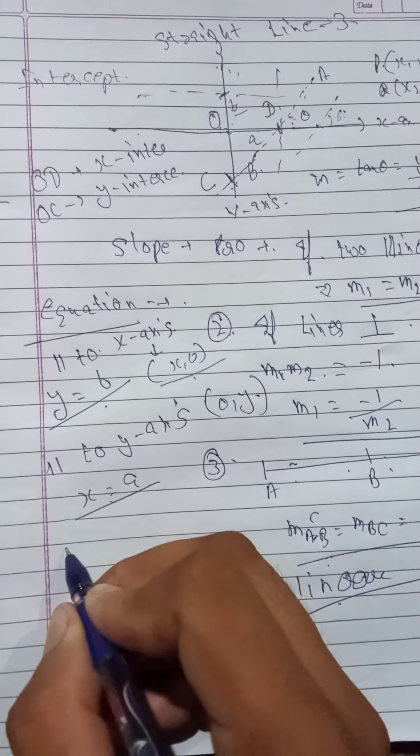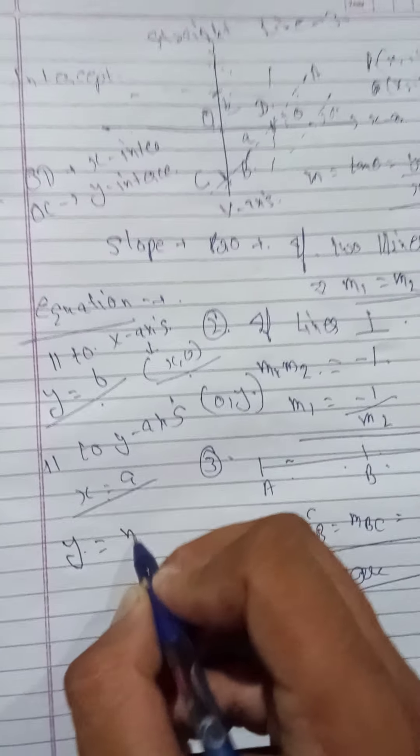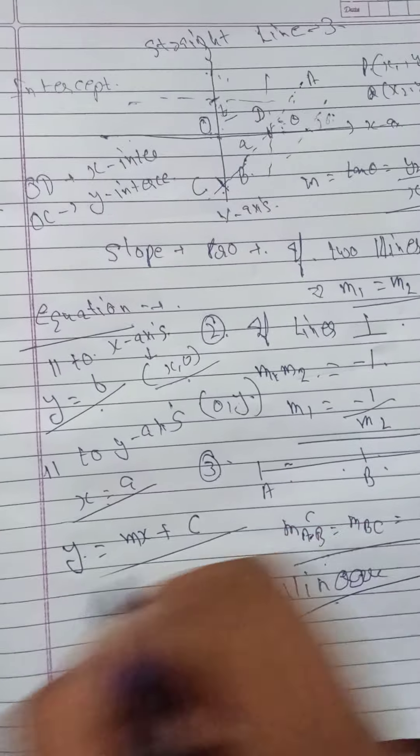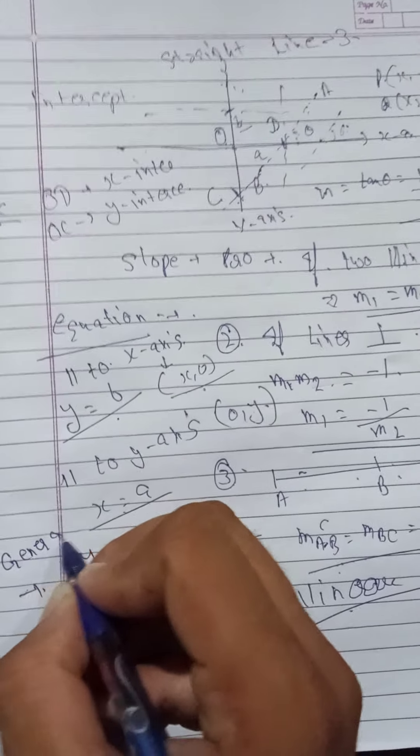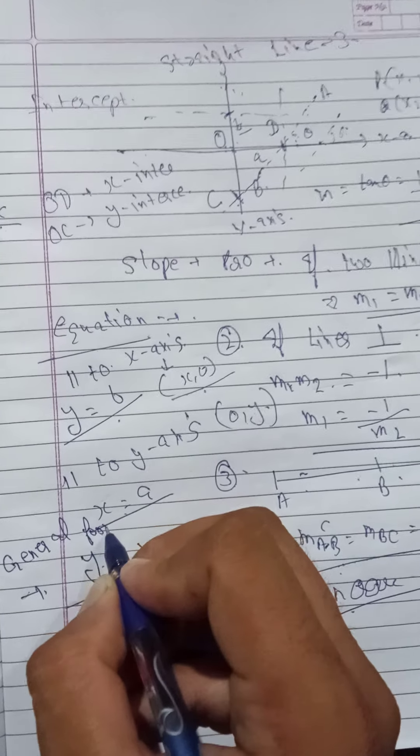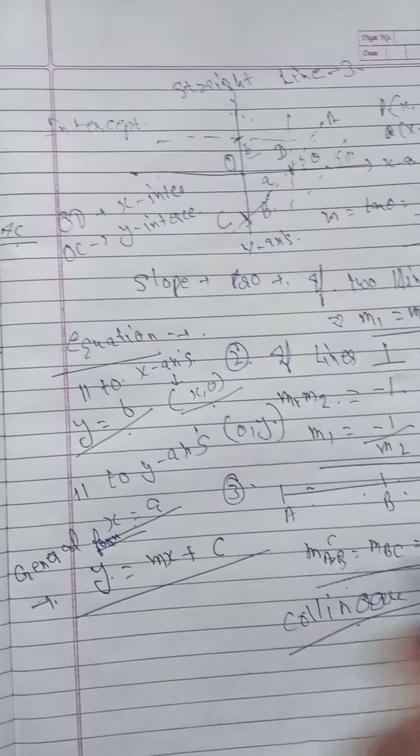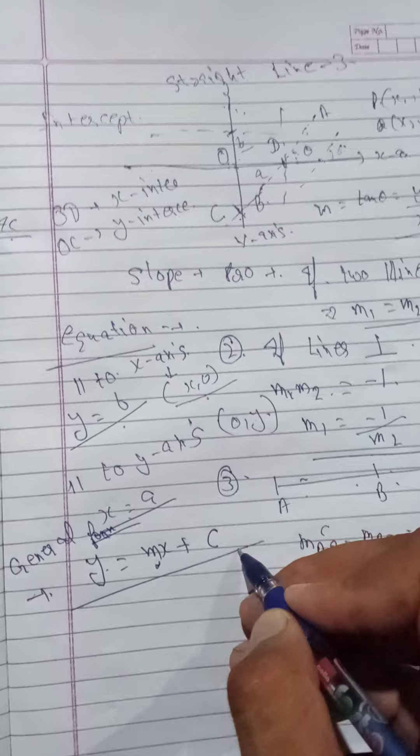Any point on y-axis will be 0,y and any point on x-axis will be x,0. From this we define a term that y is equal to mx plus c. This is the general form of an equation where x,y are the point, m is the slope of line, and c is the intercept made by the line.